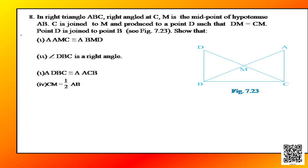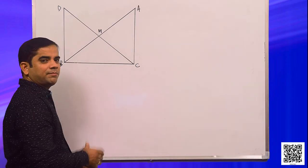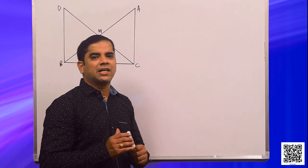Let us discuss question number 8. In right triangle ABC, right angle at C, M is the midpoint of hypotenuse AB. C is joined to M and produced to a point D such that DM is equal to CM. Point D is joined to point B. I have drawn the diagram as per your book.